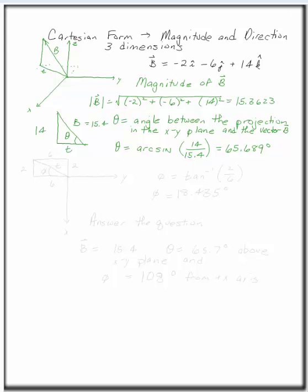The next angle we want to find is the angle in the xy plane. So in this particular instance, if we look at the xy plane, what we have is a -2 component, so this is 2, and a -6 component, so this is 6.